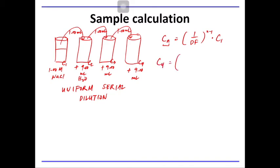The dilution factor is basically 10. So n minus 1 is the number of dilutions that we have performed, so it's basically 4 minus 1, so 3. The original concentration is 1 molar. So we have 1.00 times 10 to the negative 3 molar of sodium chloride. That is a very diluted concentration of solution.